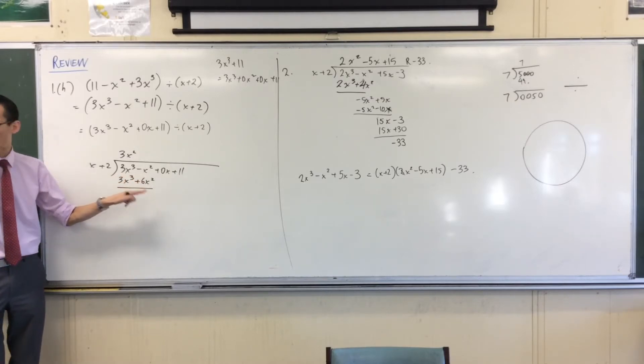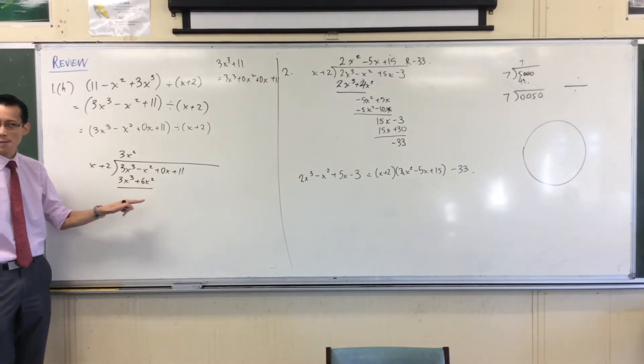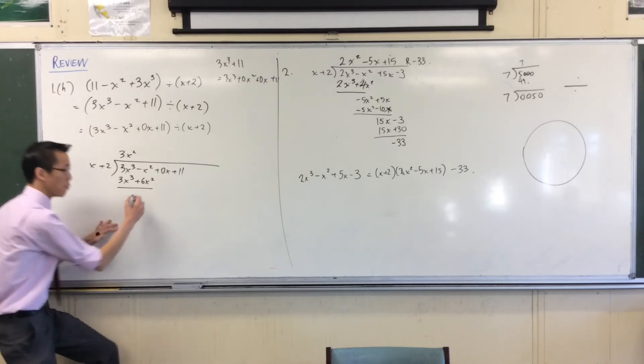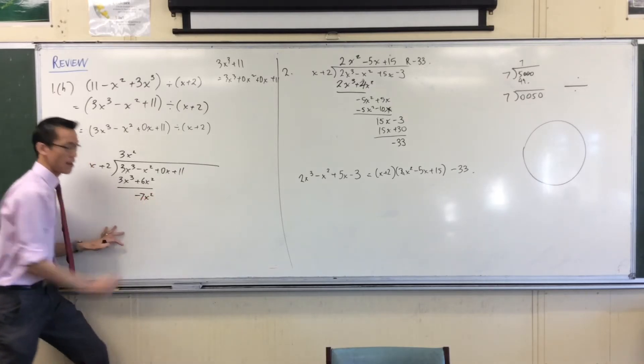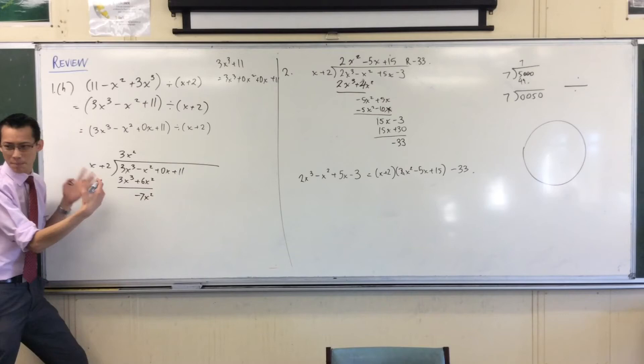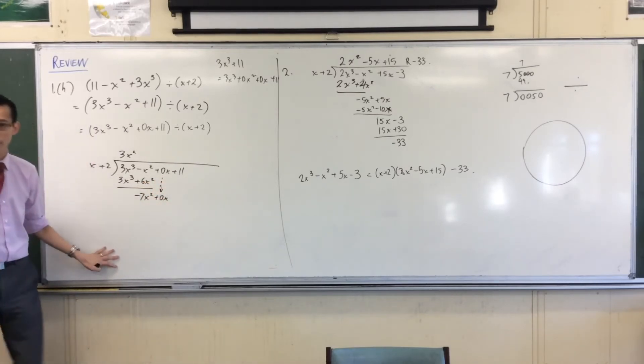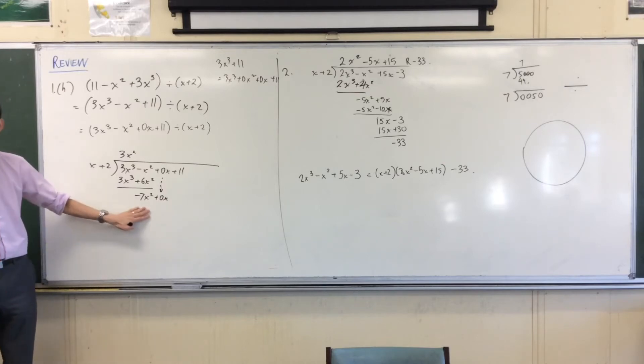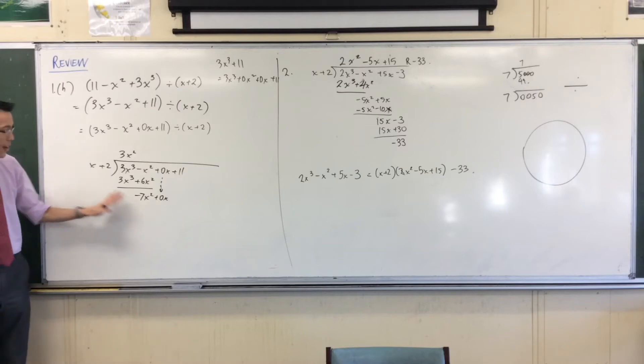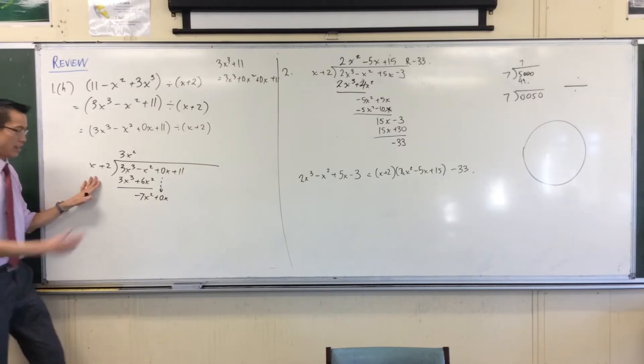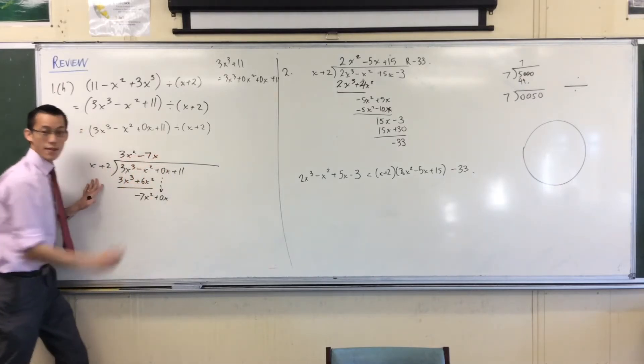Do the subtraction. Minus x squared, take away 6x squared. It's even more negative, so negative 7x squared. And then, a bit weird, but I've got this 0x that comes down, so plus 0x. Yep. What do I do with this minus 7x squared? What am I going to think about? Divide by x. Yeah, divide by x. How many x's do I fit in there? And the answer is minus 7x of them.